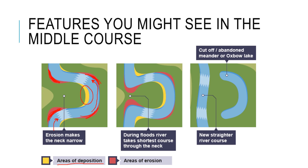What's going to happen is — as you can see in the second image — we've got two areas of erosion taking place, and eventually these two are going to meet. On the final image you can see the consequence: the two areas meet, and the water takes the quickest possible route, so the river channel becomes straighter and we're left with something called an Oxbow Lake.